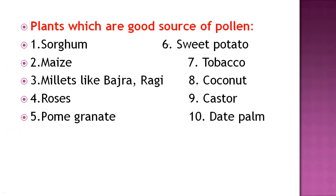Similarly, other plants are good sources of pollen. Remember sorghum, millet like bajra or ragi, rose, pomegranate, sweet potato, tobacco plant, coconut plant, castor plant, and date palm trees. All these plants are very good sources of pollen. Other vegetables and ornamental plants also provide pollen.